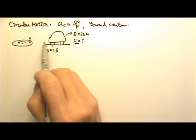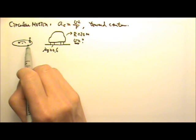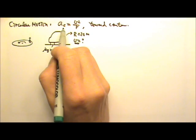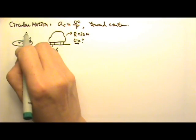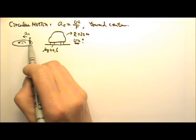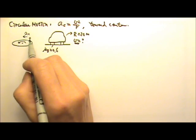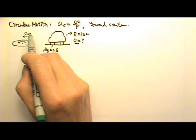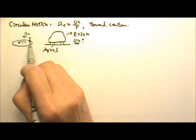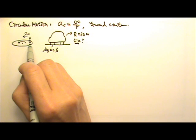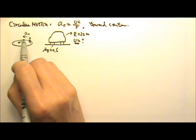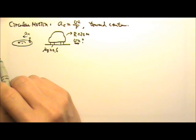For both of these cases — a person doing circular motion and a car making a horizontal turn — the centripetal acceleration goes towards the center, which means it has nothing to do with vertical forces. So gravity and the normal force cannot contribute to the centripetal acceleration. The only horizontal force on the person is friction, so friction must be the one providing the centripetal force.